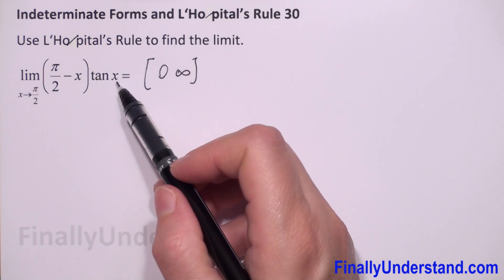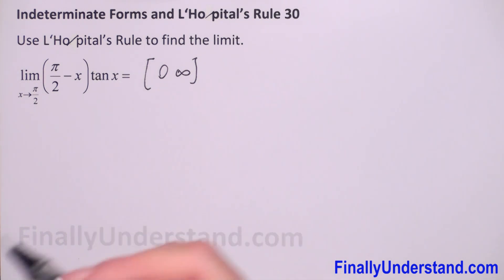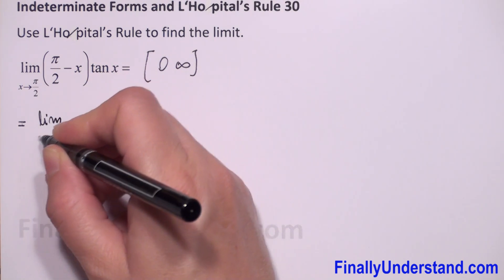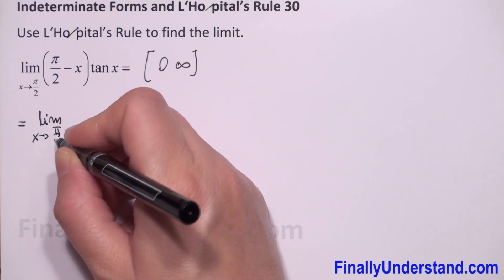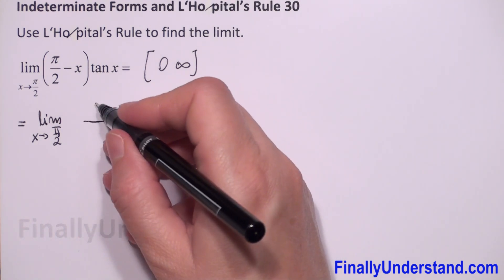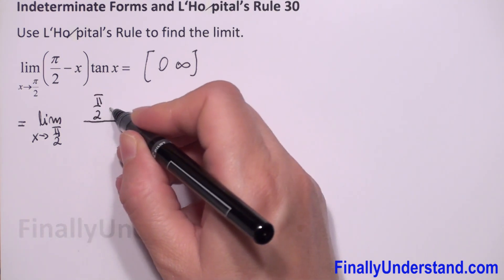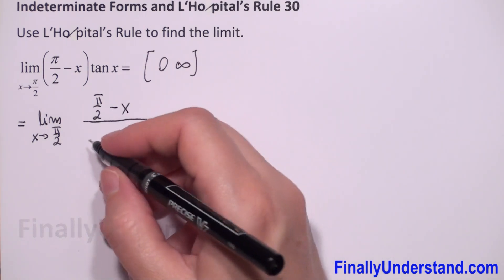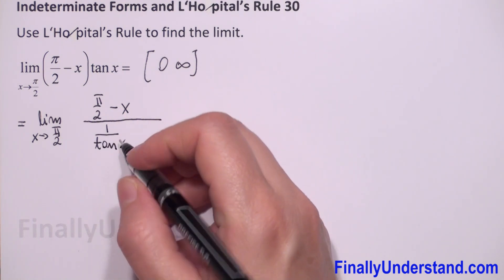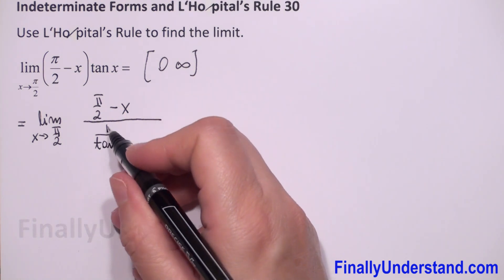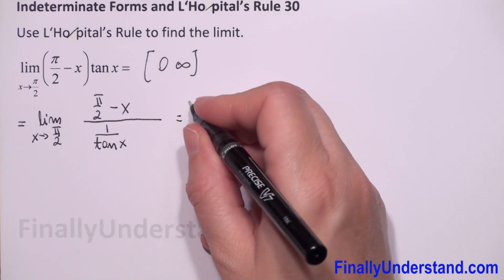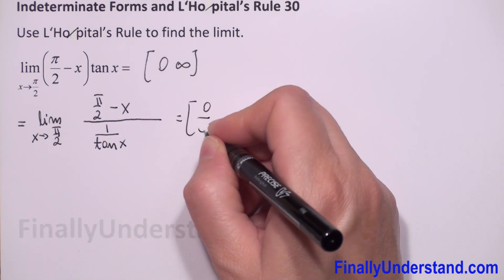Because tangent of x is going to infinity, we can rewrite this. This is the limit as x approaches pi over 2, and I will put pi over 2 minus x in the numerator, and 1 over tangent of x in the denominator, because tangent goes to infinity, so 1 over infinity gives us 0. Now we have 0 over 0.